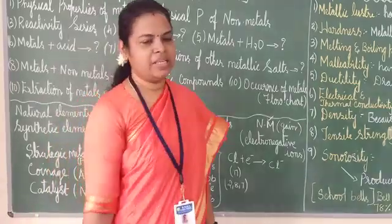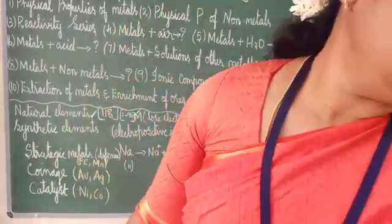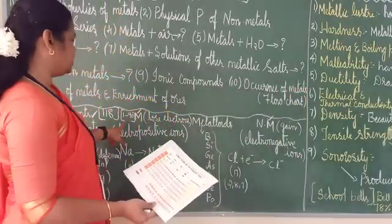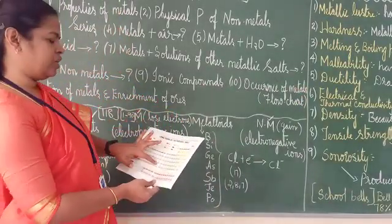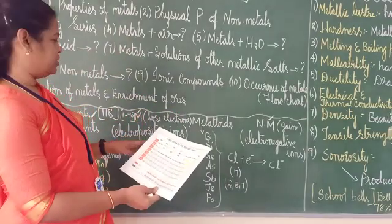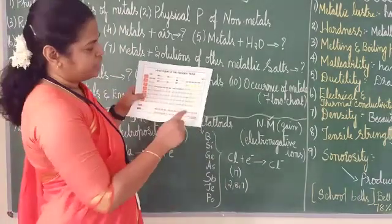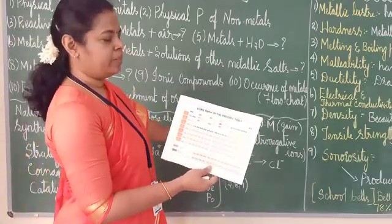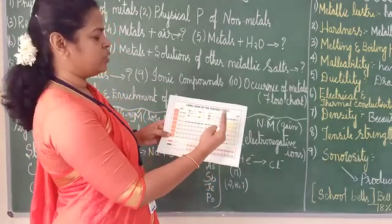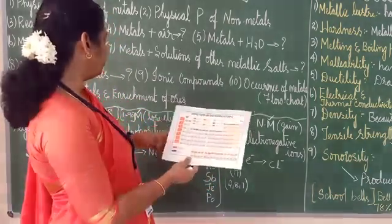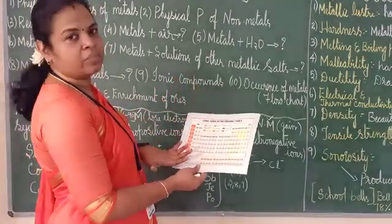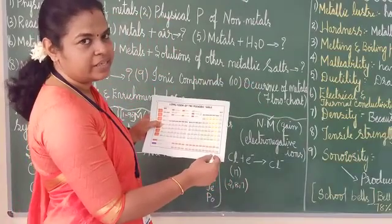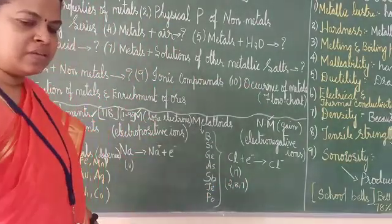118 elements are in the modern periodic table. Elements 1 to 90 are natural elements and all the others are man-made elements. There is a zigzag line in the periodic table — that zigzag line marks the metalloids. All elements on one side of the metalloids have the properties of metals, and on the other side they are non-metals. The last group are noble gases.